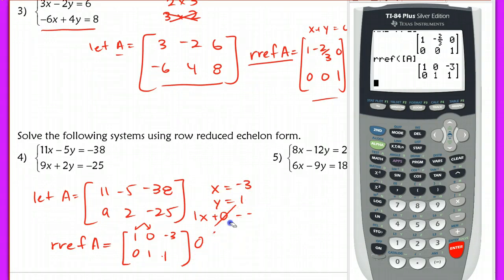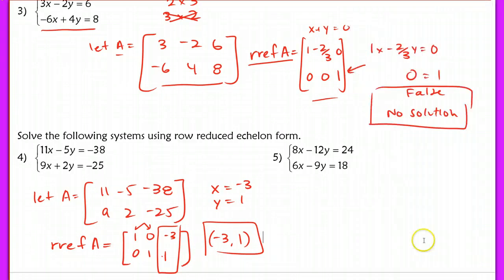When you read your row-reduced echelon form of your matrix, these represent your solutions with x and y here. So it's pretty quick and really easy to solve this system now.